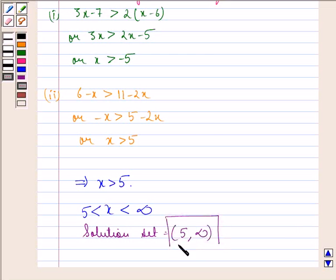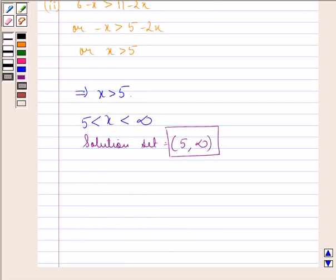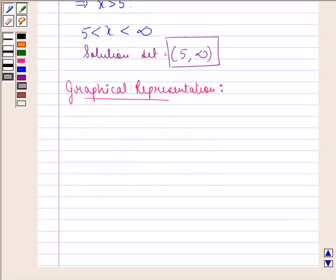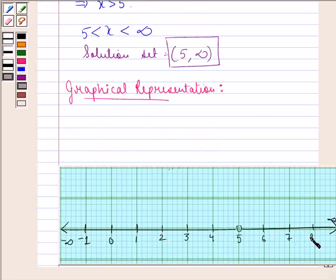Now let's draw a representation of this solution set on the number line. We see that this line shows the solution set is 5 to infinity, where we notice that 5 is not included. So our answer to this is 5 infinity, where 5 and infinity are not included.